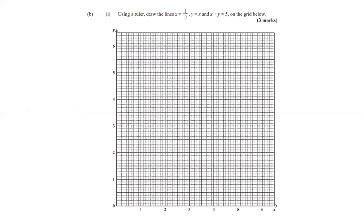Part B now asks us to draw three lines on the grid using a ruler: x = 1/2, y = x, and x + y = 5. We get one mark per line. For x = 1/2: noting that on the x-axis 2 centimeters equals one unit, the line x = 1/2 is drawn at that position, indicated by the orange line.